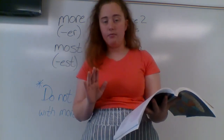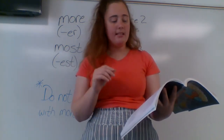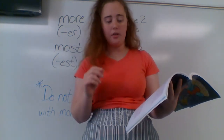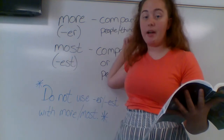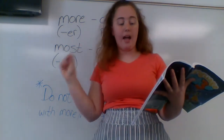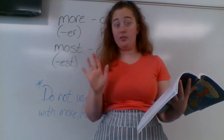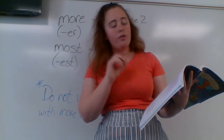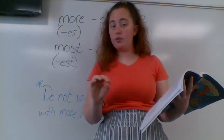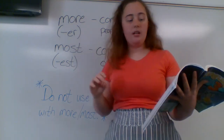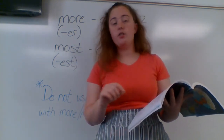Let's take a look at Think A. It says: underline the correct adjective in parentheses for each comparison. Number one: at our piano recital, Emma was more nervous or nervouser than Ethan. They're comparing two people — Emma and Ethan. Count the syllables: 'nervous' — that's two syllables. With two syllables, our rule of thumb says we're going to use 'more' or 'most.' In this case, we use 'more nervous.' Go ahead and underline 'more nervous.'